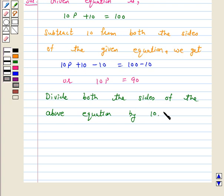By doing so we will get 10p upon 10 is equal to 90 upon 10, or p is equal to 9.